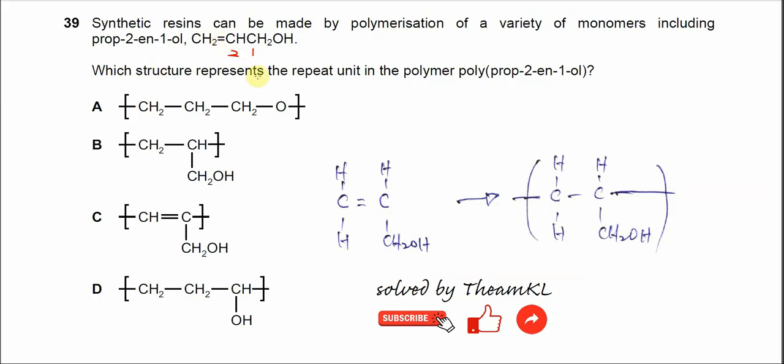Which structure represents the repeat unit in the polymer poly(prop-2-en-1-ol)? It's better to draw the structure like this: put the C=C double bond here and place the four groups around the double bond.